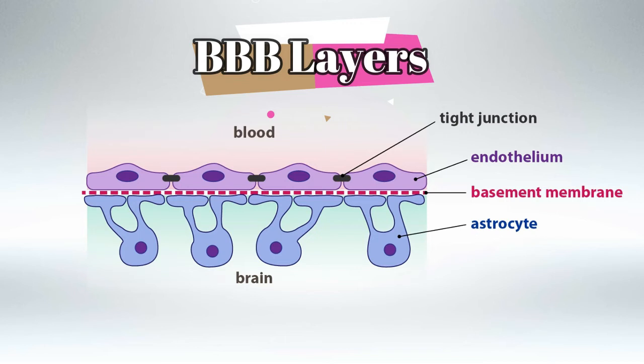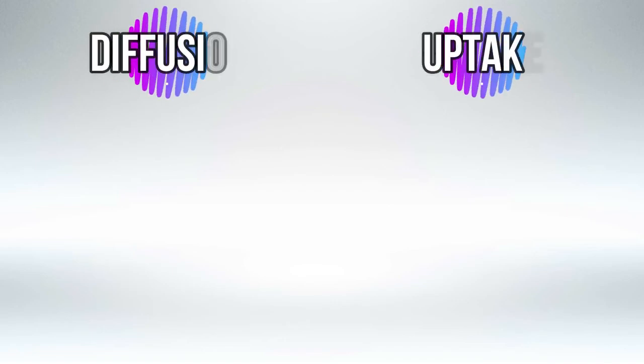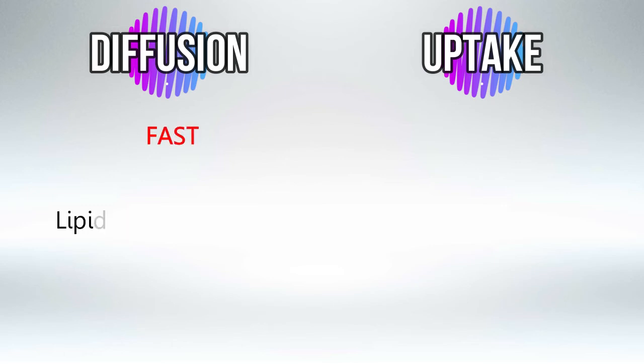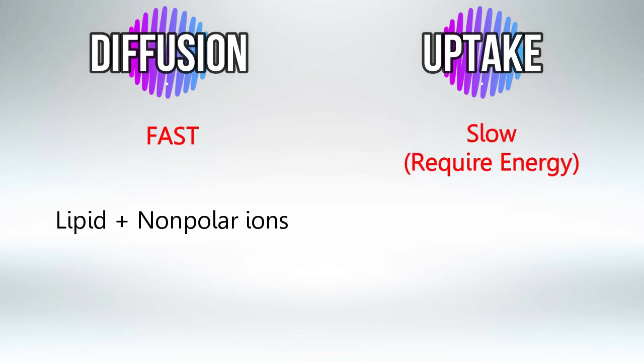Any substance that wants to go from the blood into the nervous tissue must pass through all four of these structures. There are two main ways for a substance to cross the blood-brain barrier: diffusion or uptake. Diffusion is much faster than uptake because it doesn't require any effort from the astrocytes, and includes lipids and non-polar ions. Uptake is slower because it requires the astrocytes to actively uptake substances from the blood, and includes glucose and amino acids.